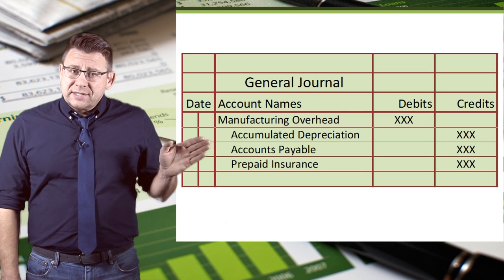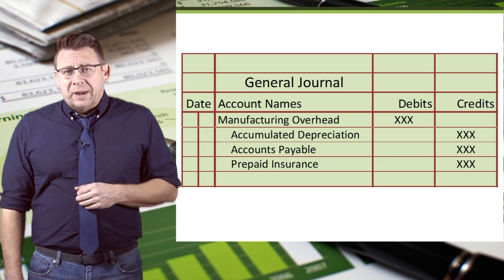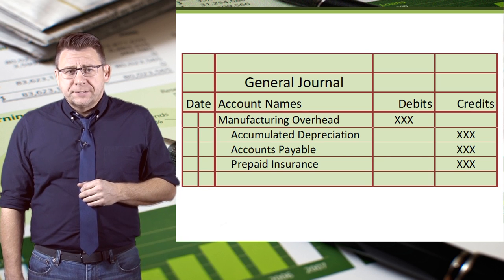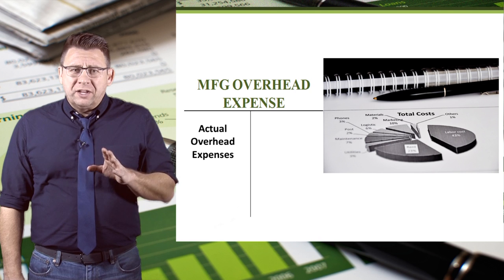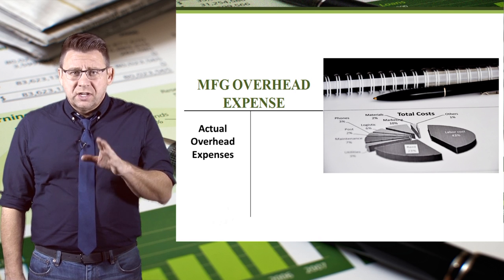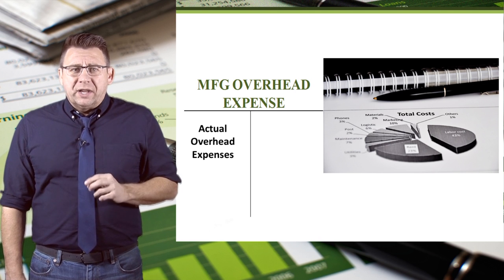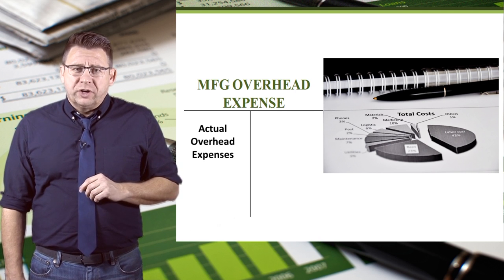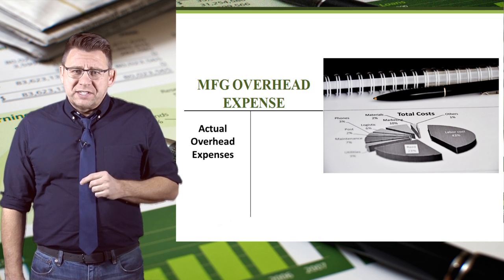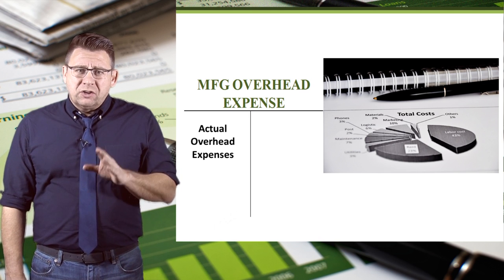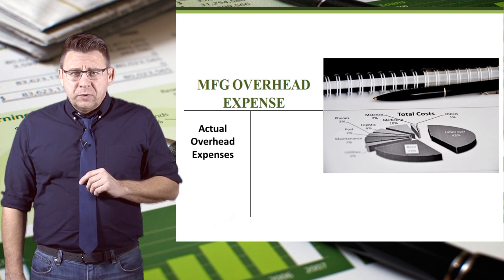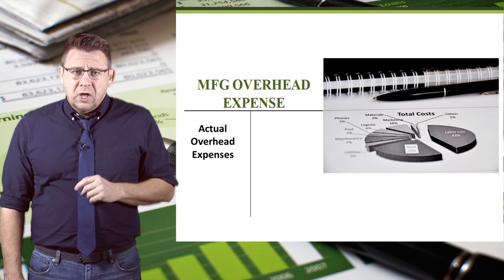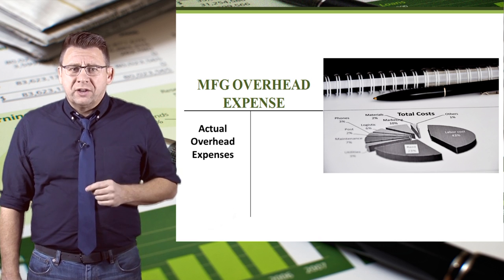The credits still go to the related balance sheet accounts. So actual manufacturing overhead costs are debited to the account manufacturing overhead. This account is an expense account, but it is where all overhead is accumulated before it is moved to WIP. So let's learn how to do that.